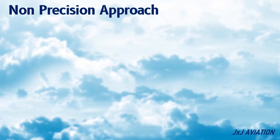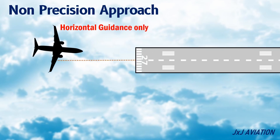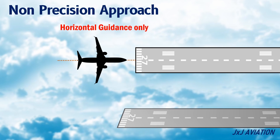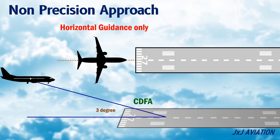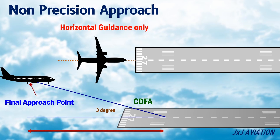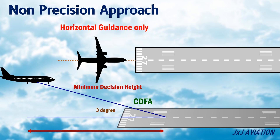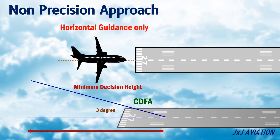What is a Non-Precision Approach? A Non-Precision Approach only provides horizontal guidance. A Continuous Descent Final Approach, or CDFA technique, is used to descend continuously at a particular angle towards the runway after the final approach point. The final approach point will be located at a particular distance from the runway. A Non-Precision Approach will include a Minimum Decision Height or Minimum Decision Altitude. The aircraft can descend below this altitude only after visual confirmation of the runway is achieved. If visual confirmation is not achieved until a particular point or distance, a go-around must be performed.